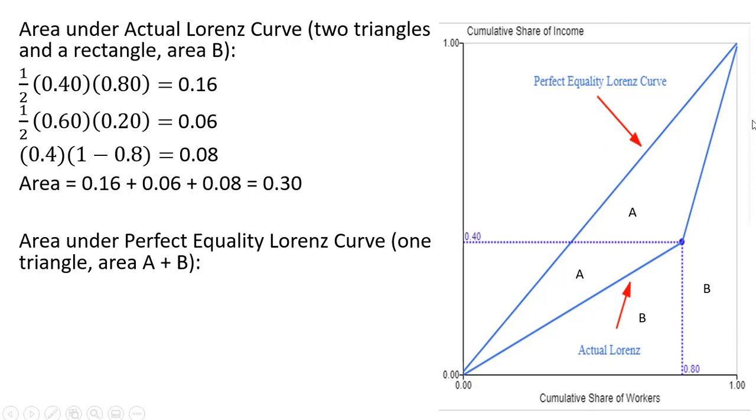Now we're going to calculate the area under the perfect equality Lorenz curve. That's going to consist of area A and B, and area A and B is just one giant triangle, and that area will always equal 0.5. So with a base of 1 and height of 1, half of that gives us an area of 0.5.